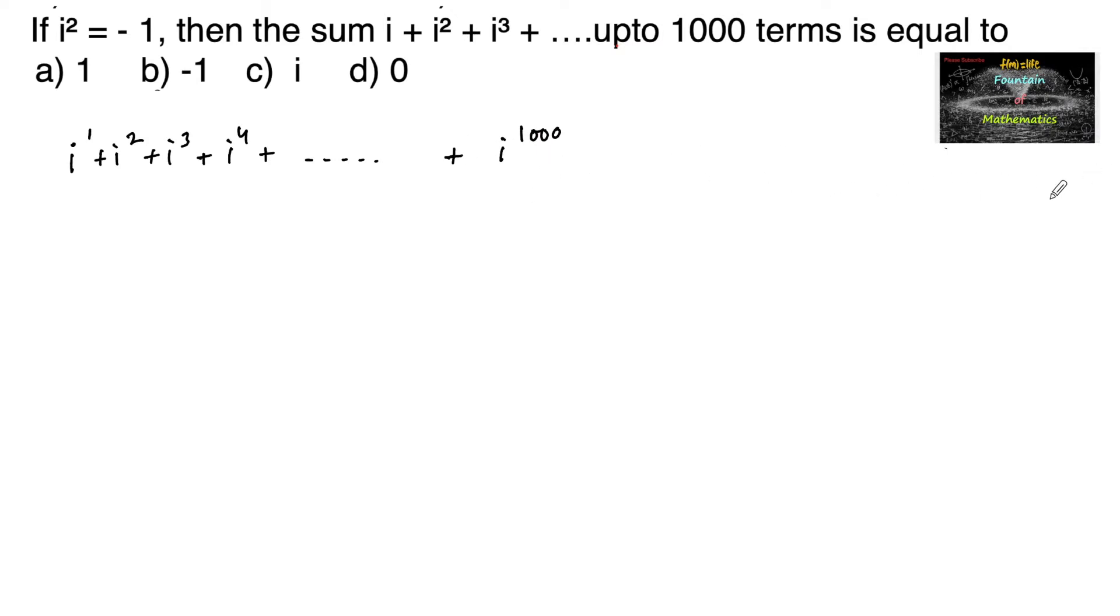Since we know that i^(4n) = 1, i^(4n+1) = i, i^(4n+2) = i² = -1, and i^(4n+3) = -i. If you add all these four consecutive powers: